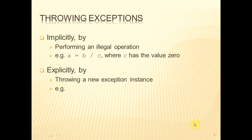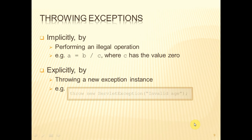Exceptions can be thrown — that is, occur — in two ways. Implicitly, by performing some kind of illegal operation, such as A equals B divided by C. There's nothing specifically illegal about that unless C has the value zero, which causes a divide-by-zero problem. This will be detected by the run-time environment and the exception will be thrown by the run-time environment. Or we could do this explicitly — perhaps we have detected some error situation that we can't deal with, and therefore we can explicitly throw a new instance of some exception. For example, within our servlets, we can throw a new servlet exception using the reserved word throw, creating a new instance of the ServletException class, where the string we put here is essentially the error message.